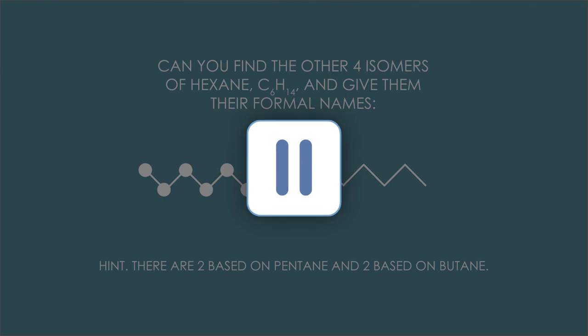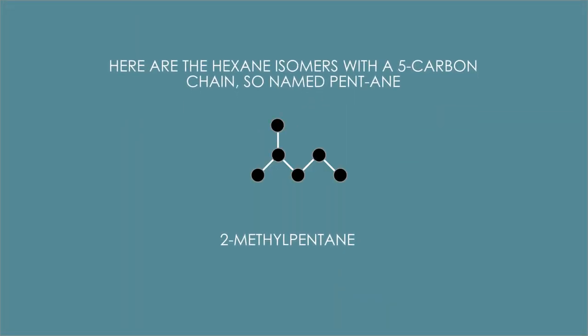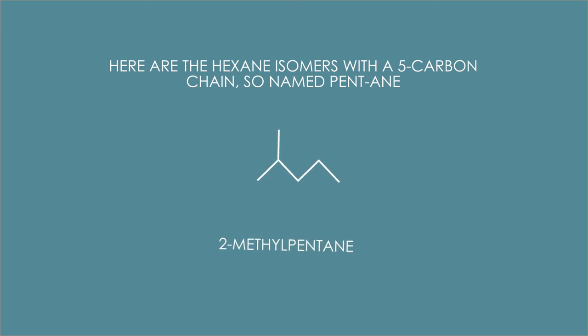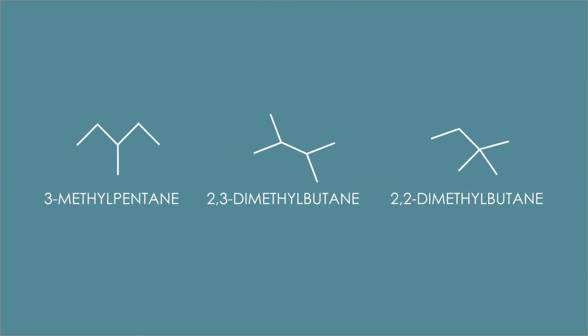Here are the hexane isomers with a 5-carbon chain, so they are named as pentane. First: 2-methylpentane — the methyl group is on the second carbon atom in the pentane chain. Count the atoms: 6 carbons, 14 hydrogens — it's still hexane. And here's the other isomer based on pentane: 3-methylpentane. And there are two more structural isomers based on butane, with only 4 carbon atoms in the longest chain: 2,3-dimethylbutane and 2,2-dimethylbutane.